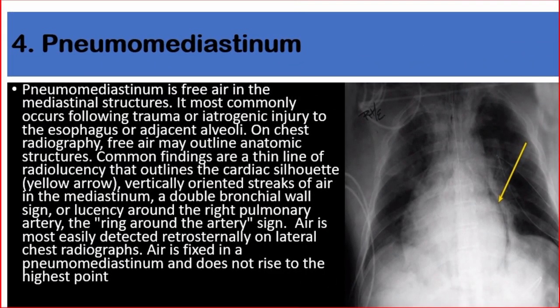Number four: pneumomediastinum. Pneumomediastinum is free air in the mediastinal structures. It most commonly occurs following trauma or iatrogenic injury to the esophagus or adjacent alveoli. On chest radiographs, free air may outline anatomic structures. Common findings are a thin line of radiolucency that outlines the cardiac silhouette, vertically oriented streaks of air in the mediastinum, a double bronchial wall sign, or lucency around the right pulmonary artery — called the ring-around-the-artery sign. Air is most easily detected retrosternally on lateral chest radiographs, and is fixed in pneumomediastinum, not rising to the highest point.